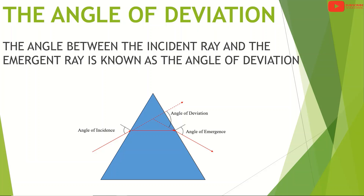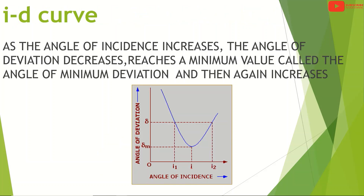The angle between the incident ray and the emergent ray is known as the angle of deviation. When you increase the angle of incidence, the angle of deviation decreases and reaches a minimum value called the angle of minimum deviation.